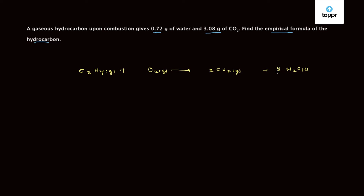For hydrogen, the water produced will have Y by 2 molecules. So the number of oxygen atoms required will be 2 times X plus Y by 2, giving us 2X + Y/2 molecules of oxygen. Water is in the liquid state. Our reaction is now completely balanced, with 2X + Y/2 molecules of oxygen on the left hand side.